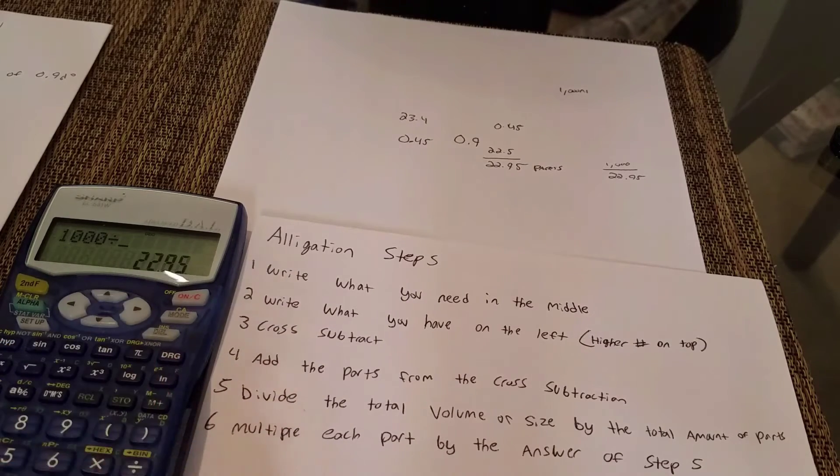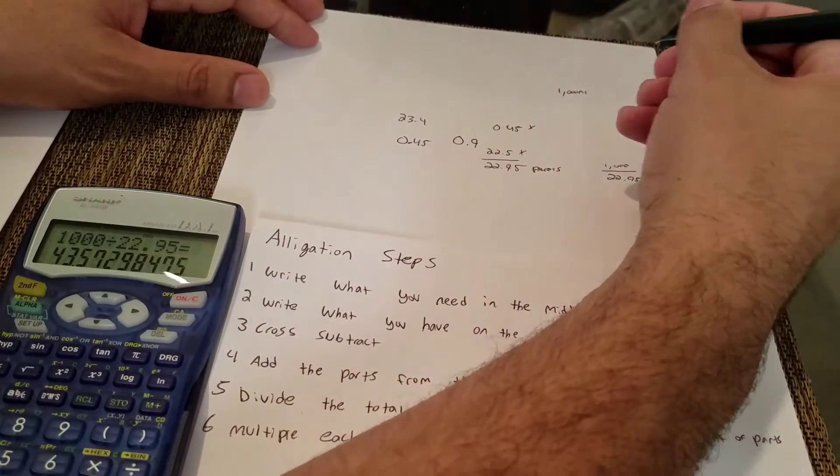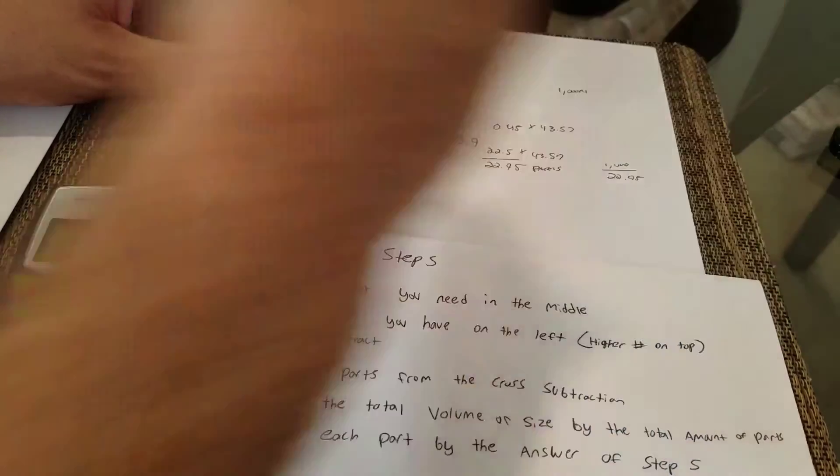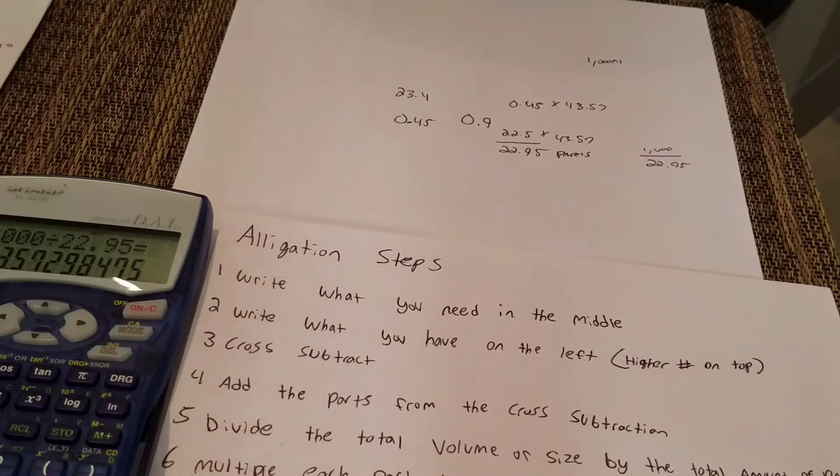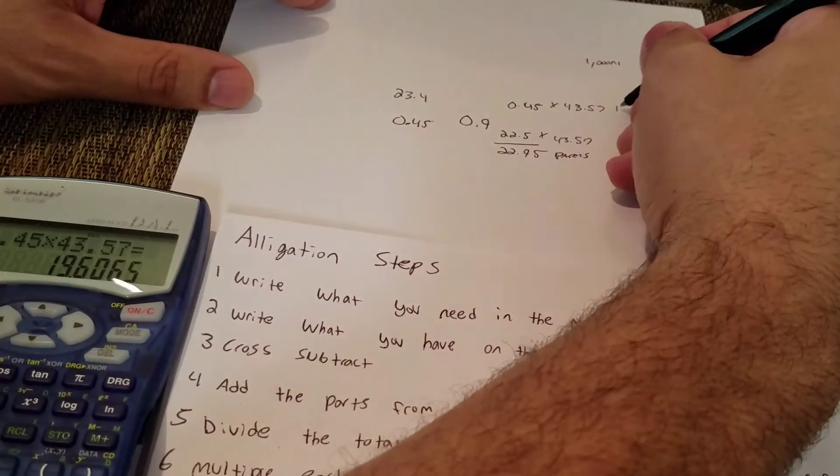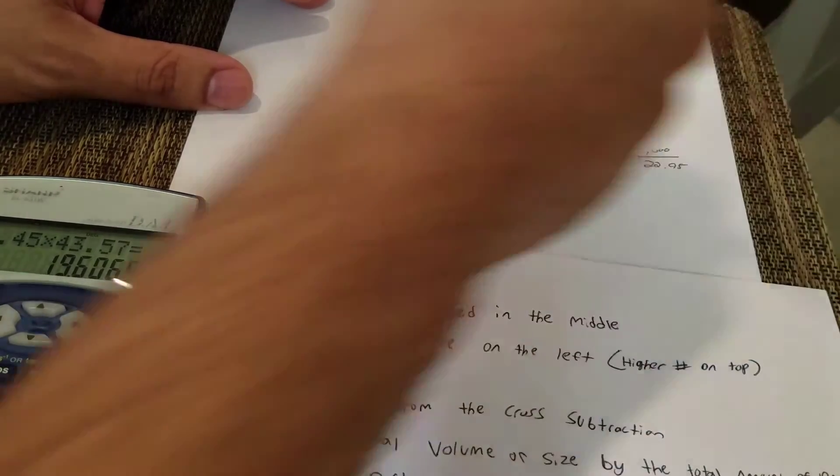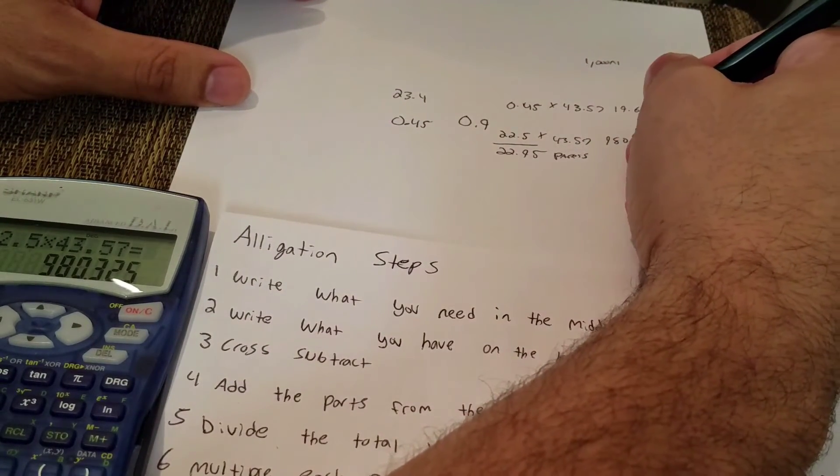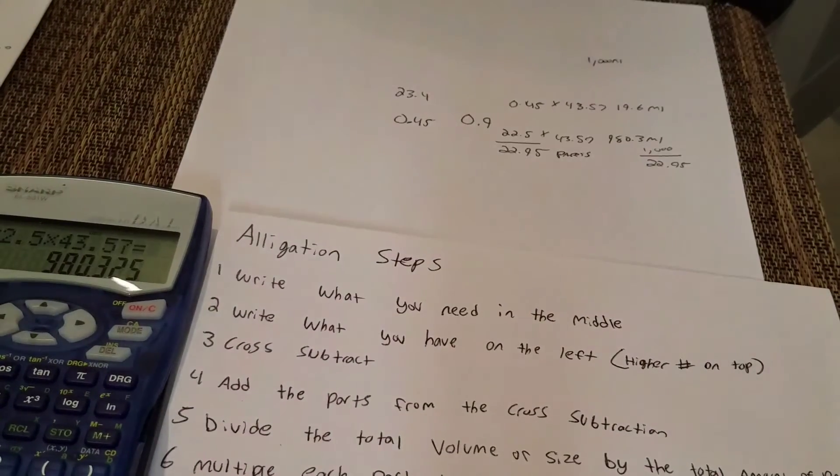The next step here says multiply each part by the answer of step 5. So we're going to do 43.57 times 0.45, which equals 19.6 mLs. And then the next part is 22.5 times 43.57, which comes out to 980.3 mLs. So what that tells you is you've solved the problem.